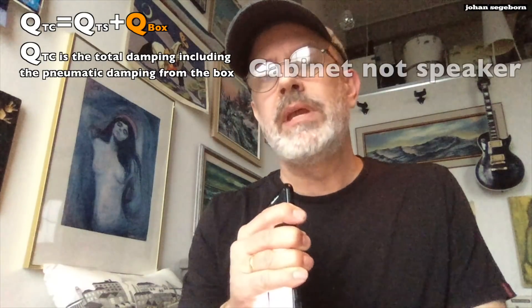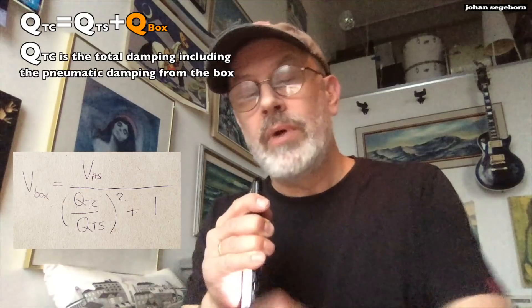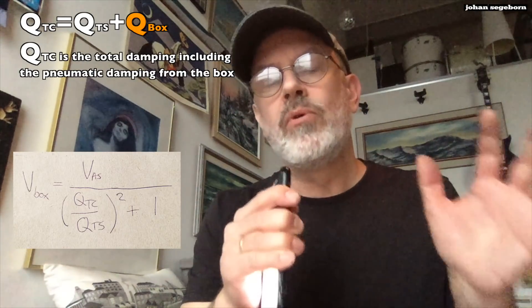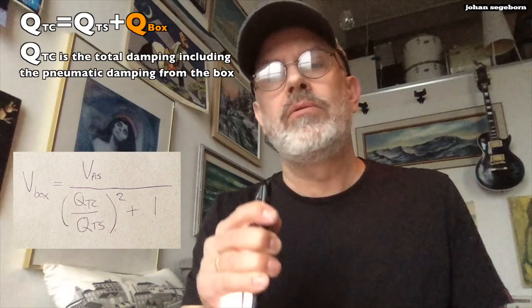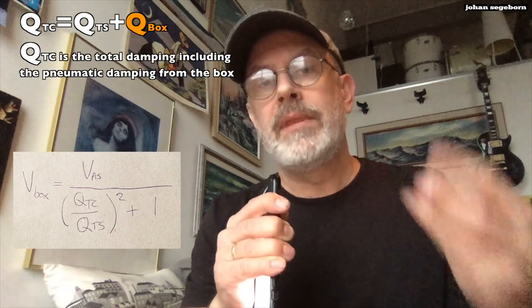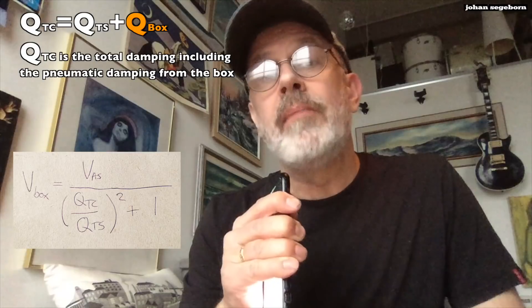Using these three parameters, you can calculate the volume of your speaker box. You also need to determine what kind of pneumatic damping you want from the box, because there are three types of damping or inverse damping: the electrical and mechanical damping from the speaker itself in free air, and then the pneumatic contribution from the box. You can see the equation here showing how the volume of your cabinet relates to these three dampings or quality factors.